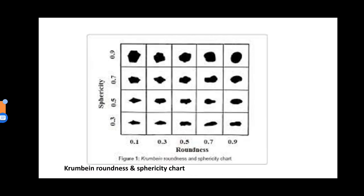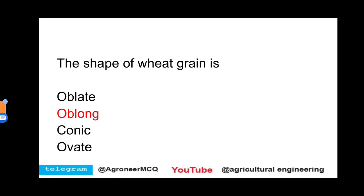There are two terms: roundness and sphericity. In the Krumbein roundness and sphericity chart we can see the difference between sphericity and roundness. If sphericity is 0.9 and roundness is 0.9, the shape is very close to both round and sphere shape — high sphericity and high roundness ratio. The answer to the question asked at the start: the shape of wheat grain is oblong.